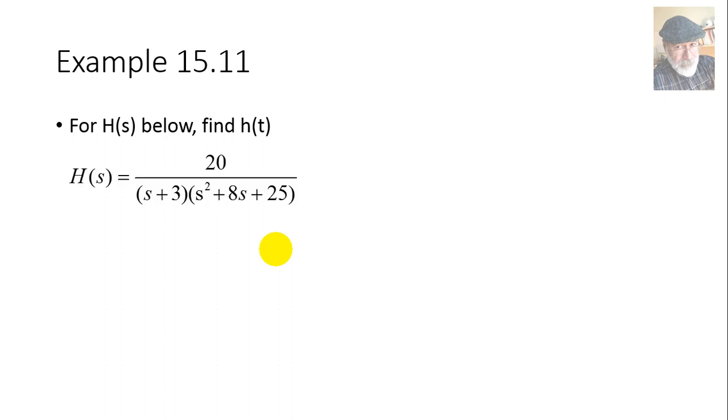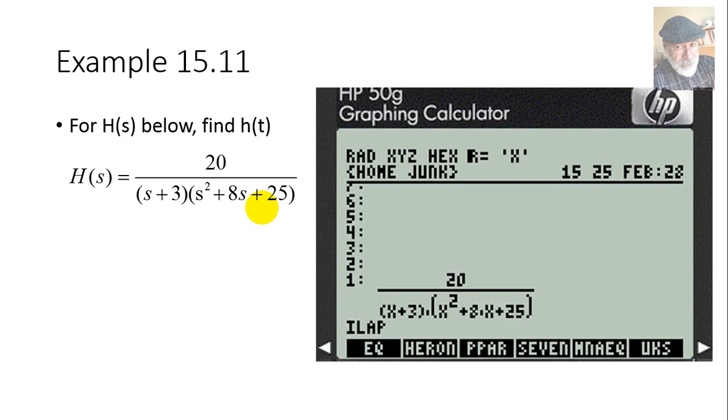The next one, 15.11, is La Pièce de Résistance of the section 15.4. It is the toughest one. It has one real eigenvalue and two complex conjugate eigenvalues. And that function, H(s). The usual. I type it in. Make sure that the variable, the independent variable is X, and that the radio buttons in mode CAS are clear, and I ask for ILAP.